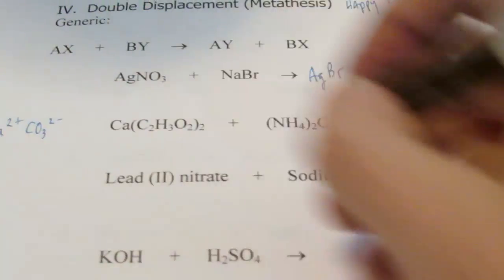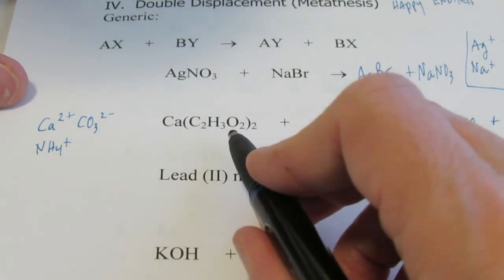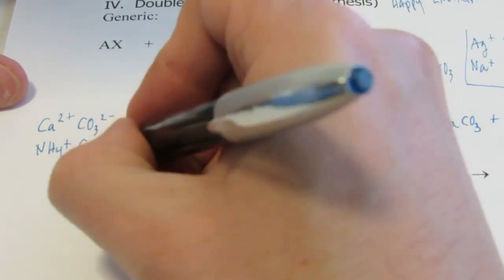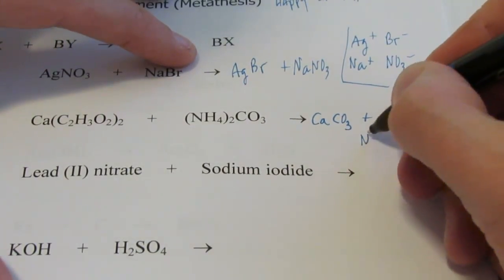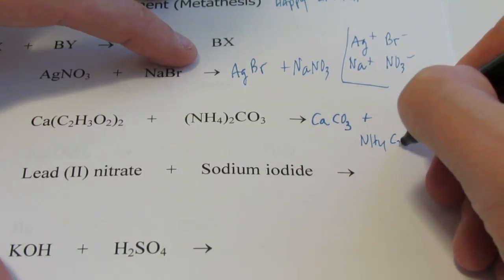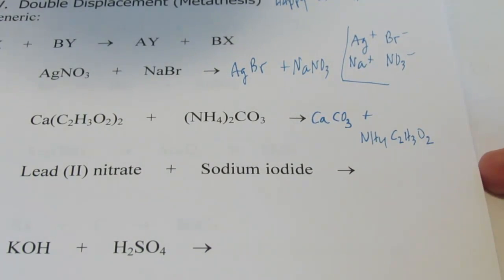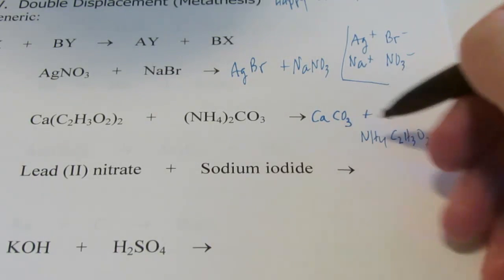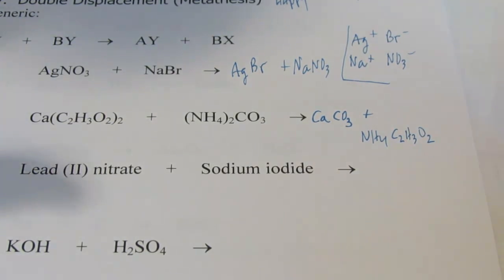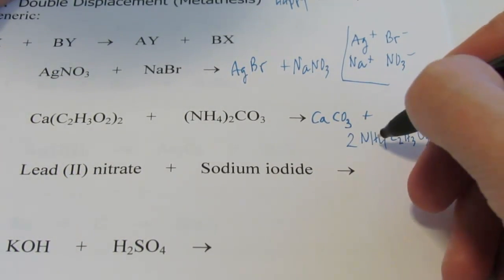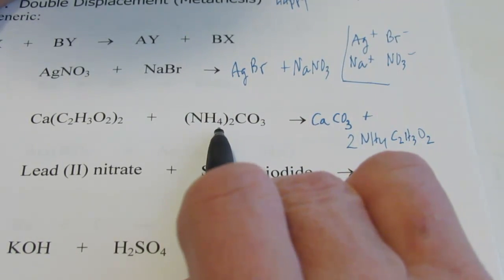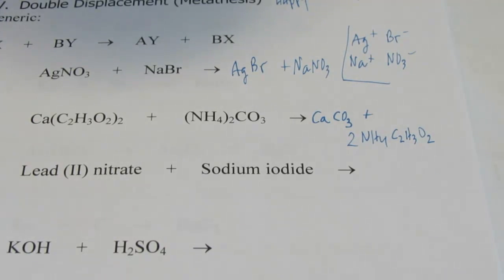So I form CaCO3 as one product. Ammonium is a positive polyatomic. It's NH4 positive. And it's going to get together with acetate. That's a negative polyatomic, C2H3O2 negative. So positive 1 and negative 1, we just need one of each. So we form NH4C2H3O2. So calcium carbonate and ammonium acetate. The formulas are written correctly. It's not balanced, I know that. We're going to fix that right now by putting a 2 here. So now I have 2 ammoniums and 2 acetates, just like I have on the reactant side.